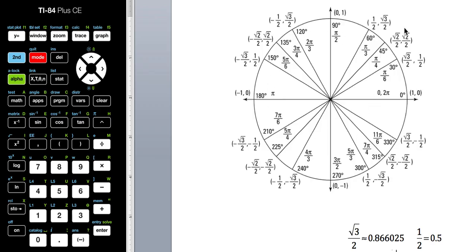Now the 45 degree angles are the easiest to remember because they're all square root of 2 over 2, square root of 2 over 2. The only thing that changes in each quadrant is the positive and negative signs.